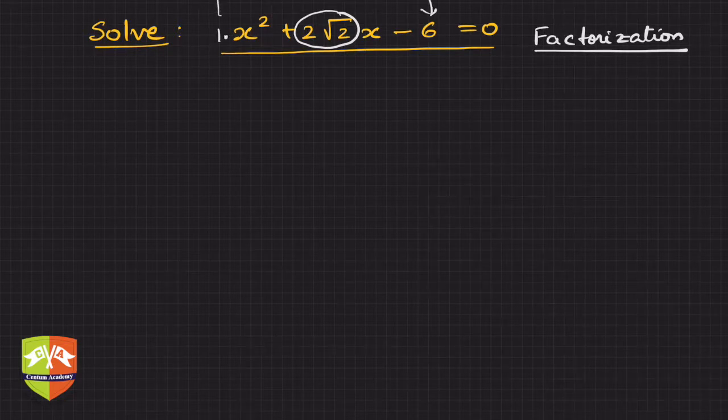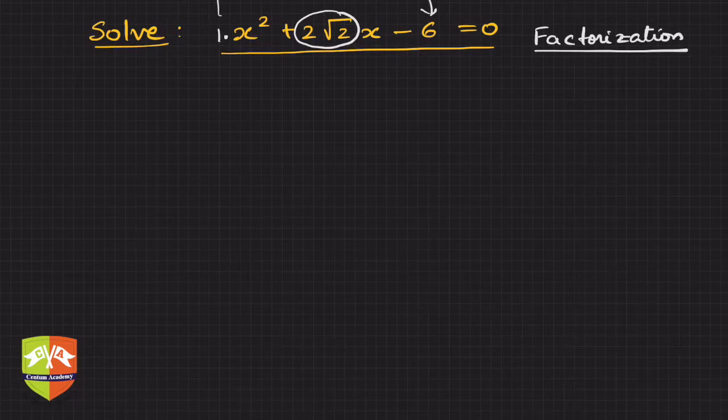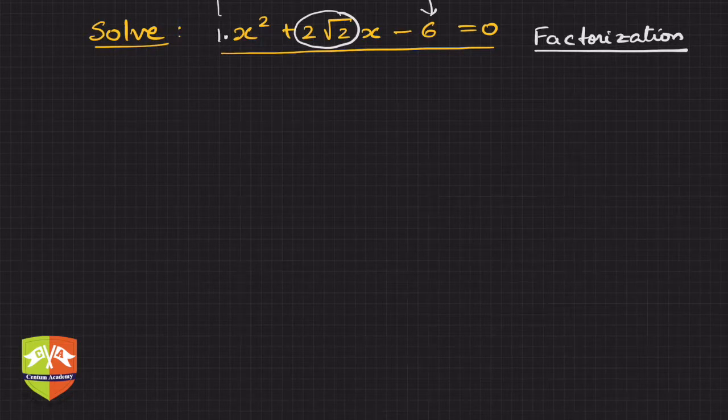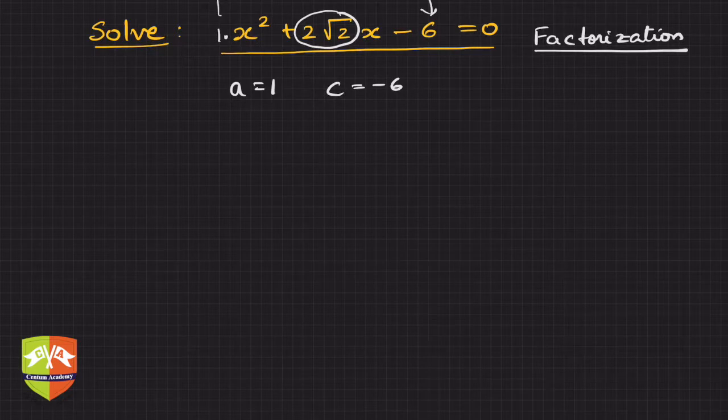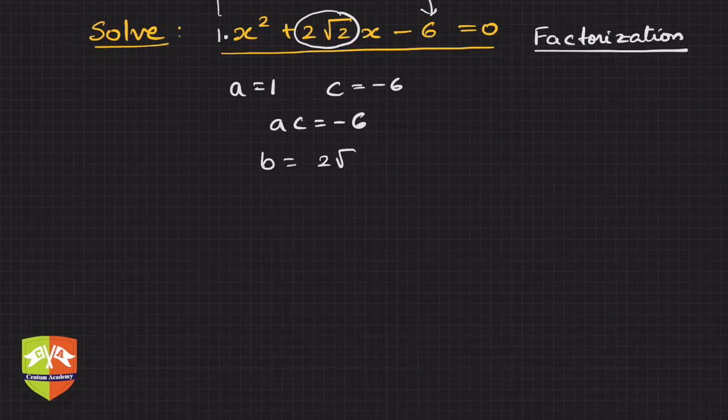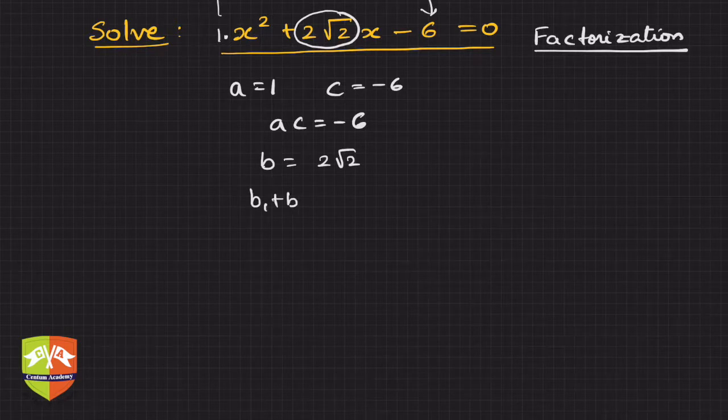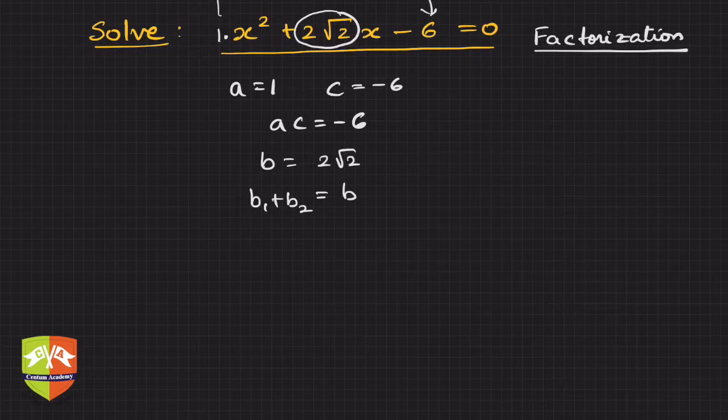Now how to do that? So clearly if you see, b here is an irrational number 2√2. Let me write it: a equals 1 here, c is -6, so ac is -6, a rational number, but my b is 2√2, irrational number.